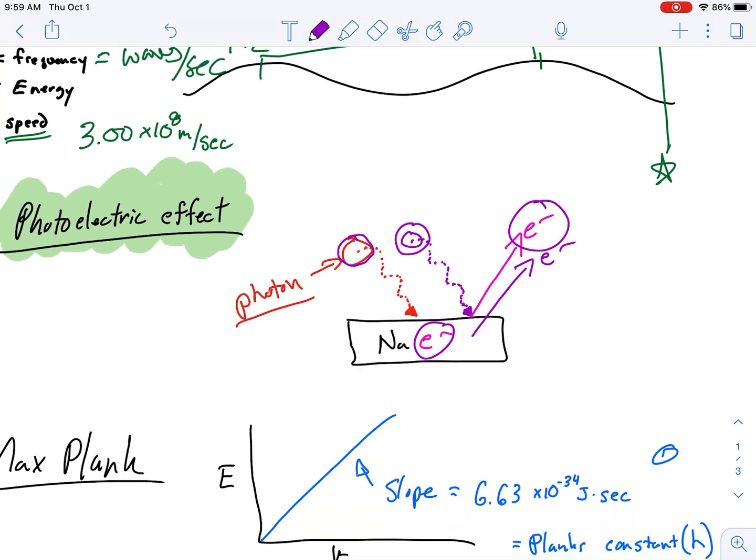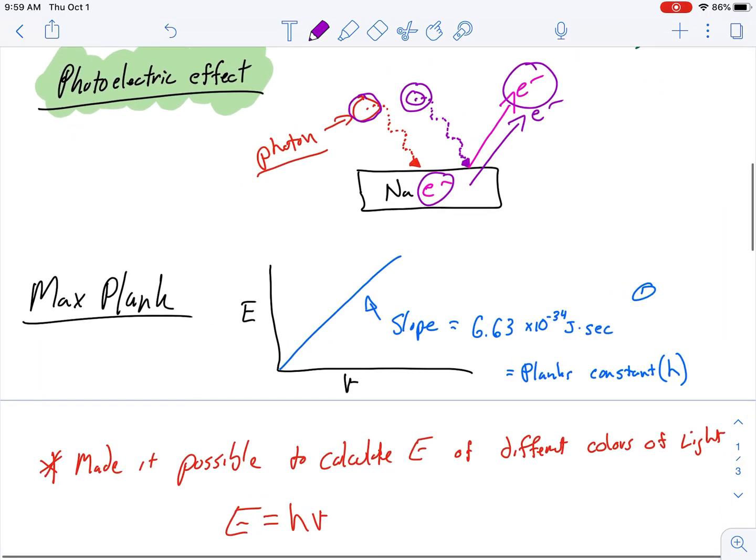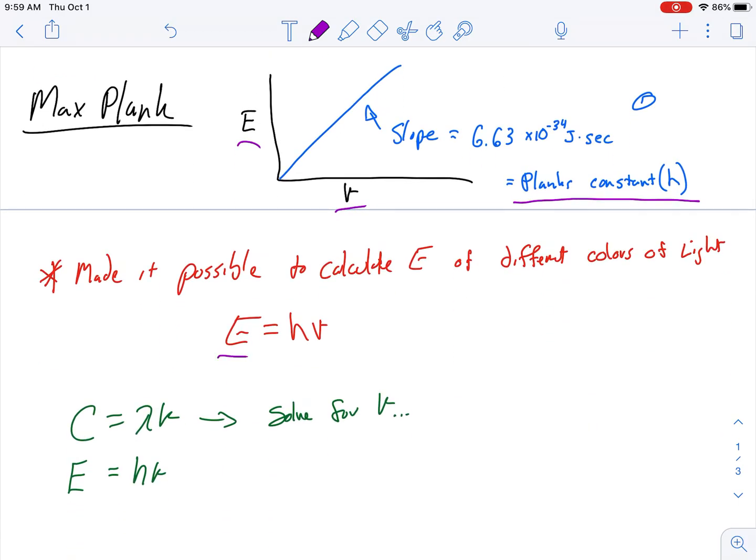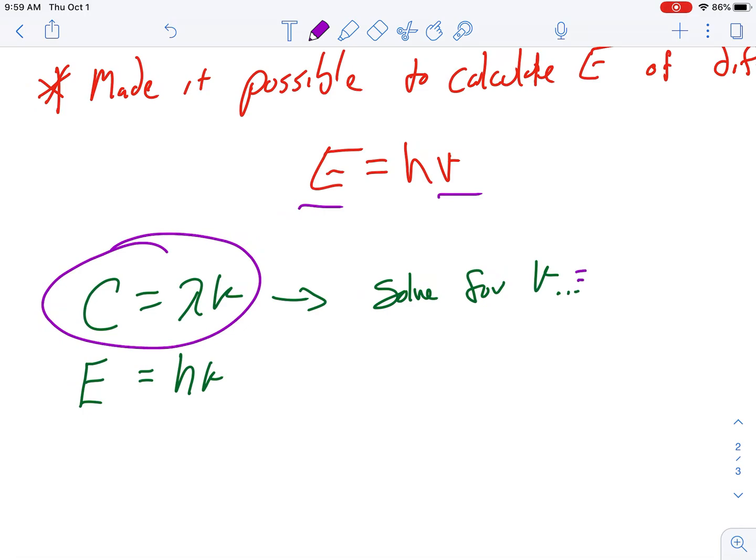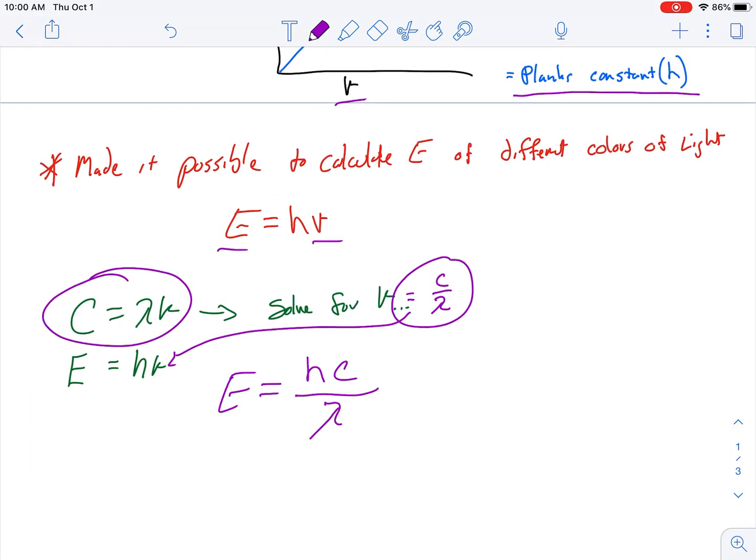The photoelectric effect states that different colors of light have different amounts of energy. Max Planck graphed energy versus frequency and came up with this slope of a line. The slope is known as Planck's constant or h, 6.63 times 10 to the negative 34 joules times seconds. With that Planck's constant, you're allowed to actually calculate how much energy a certain color of light has. E equals hv. We could use our relationship between wavelength and frequency, c equals lambda times v, to calculate v which is frequency, and plug that in. Now I have a relationship between wavelength and energy.